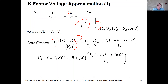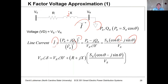The line current has a real part equal to SR times cosine theta divided by Vr, and an imaginary part equal to SR times minus sine theta divided by Vr, where theta is the power factor angle of the load. If we have a load power factor, we can get our value of theta from that.